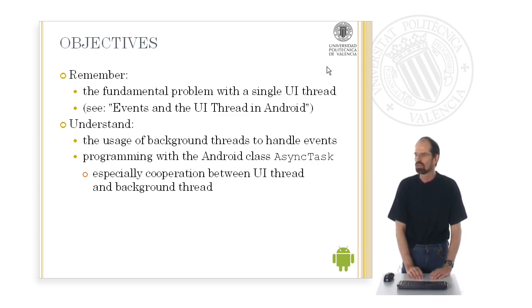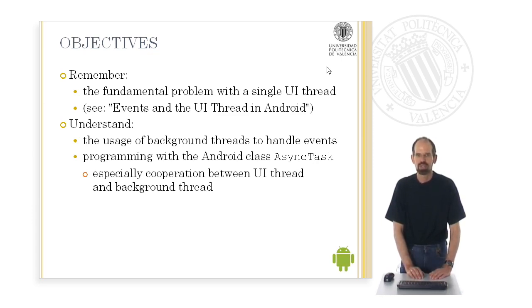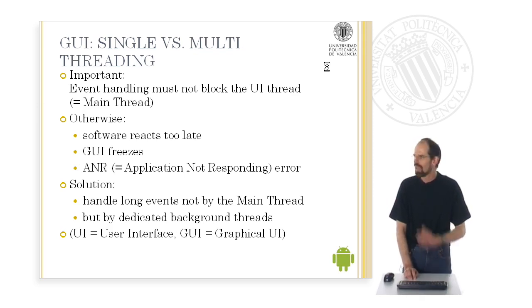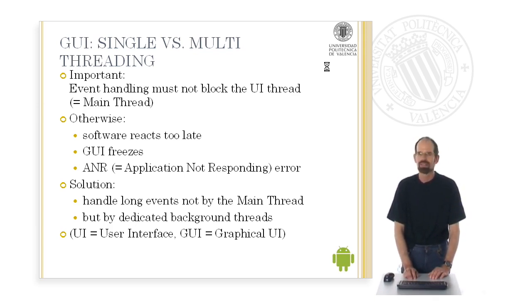Especially how this class can cooperate between UI thread and background thread. This unit is based on a former unit called 'Events and the User Interface Thread in Android,' where we saw that there is a fundamental problem when using only one single user interface thread. The problem is that event handling must not block the user interface thread — it must not block the main thread. Otherwise the software will react too late, the GUI might freeze, and you might get an Application Not Responding error. The solution is to handle long events not by the main thread itself but by dedicated background threads.